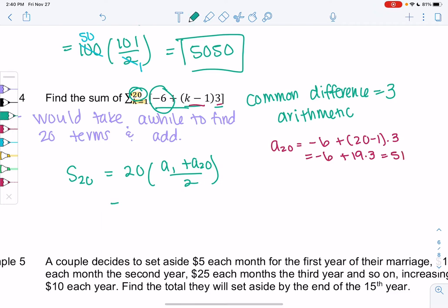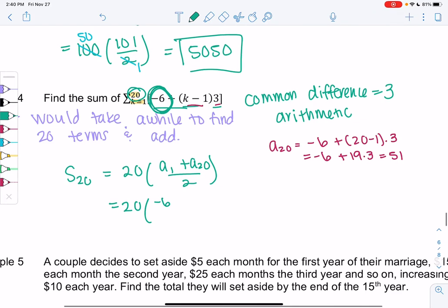And so we'll get 20 times negative 6 as my first term. You could even plug in 1 if you weren't sure. So a1 negative 6 plus 1 minus 1 times 3.